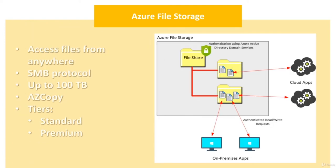Azure File Storage enables you to create a file share hosted on the cloud and share them across the internet. Azure uses the SMB protocol, compatible with many on-premise applications. Every file can be up to 1TB, and your share up to 100TB. For uploading a massive quantity or very large files, the best option is the AzCopy tool. You can choose between two tiers: Standard using hard disk, and Premium using solid-state disk. Azure File Storage is excellent for sharing files with high availability due to its use of geo-replication.